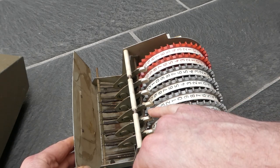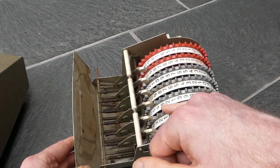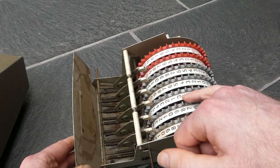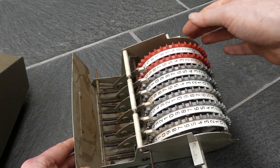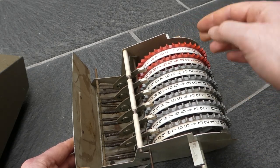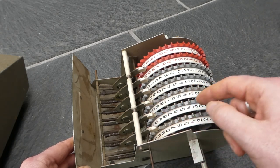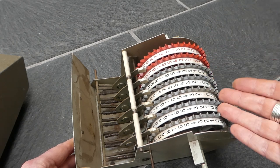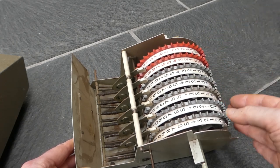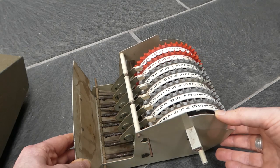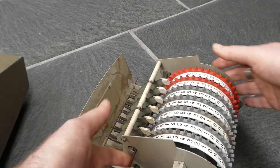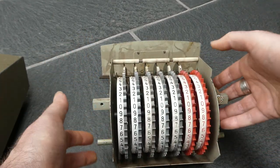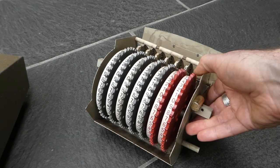And those cam followers simply push down on the spiral cam until they reach that sharp drop-off where the carry occurs. And since that occurs exactly between the nine and the zero, all the wheels move back to the zero. So it's a very simple but effective mechanism.